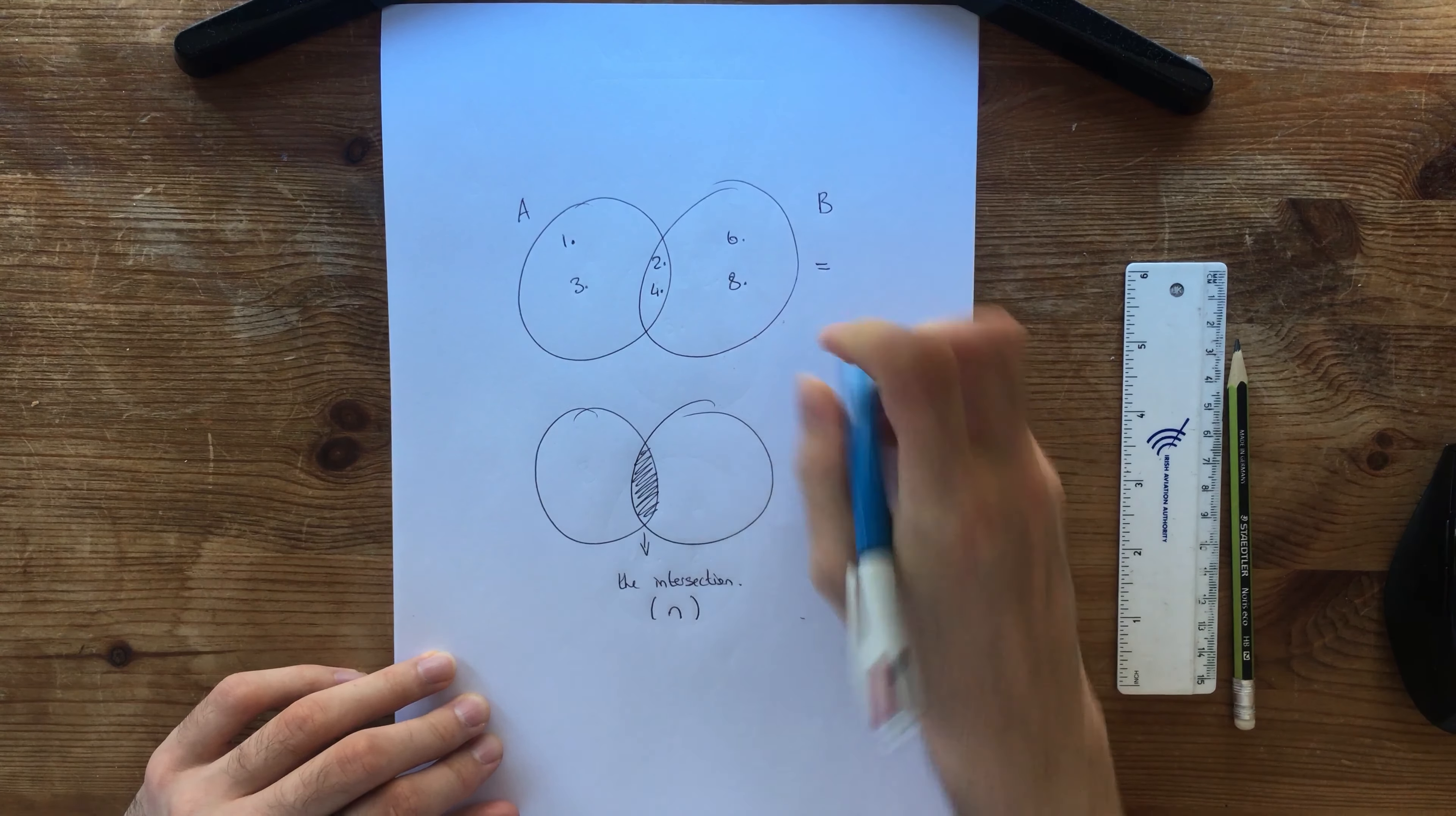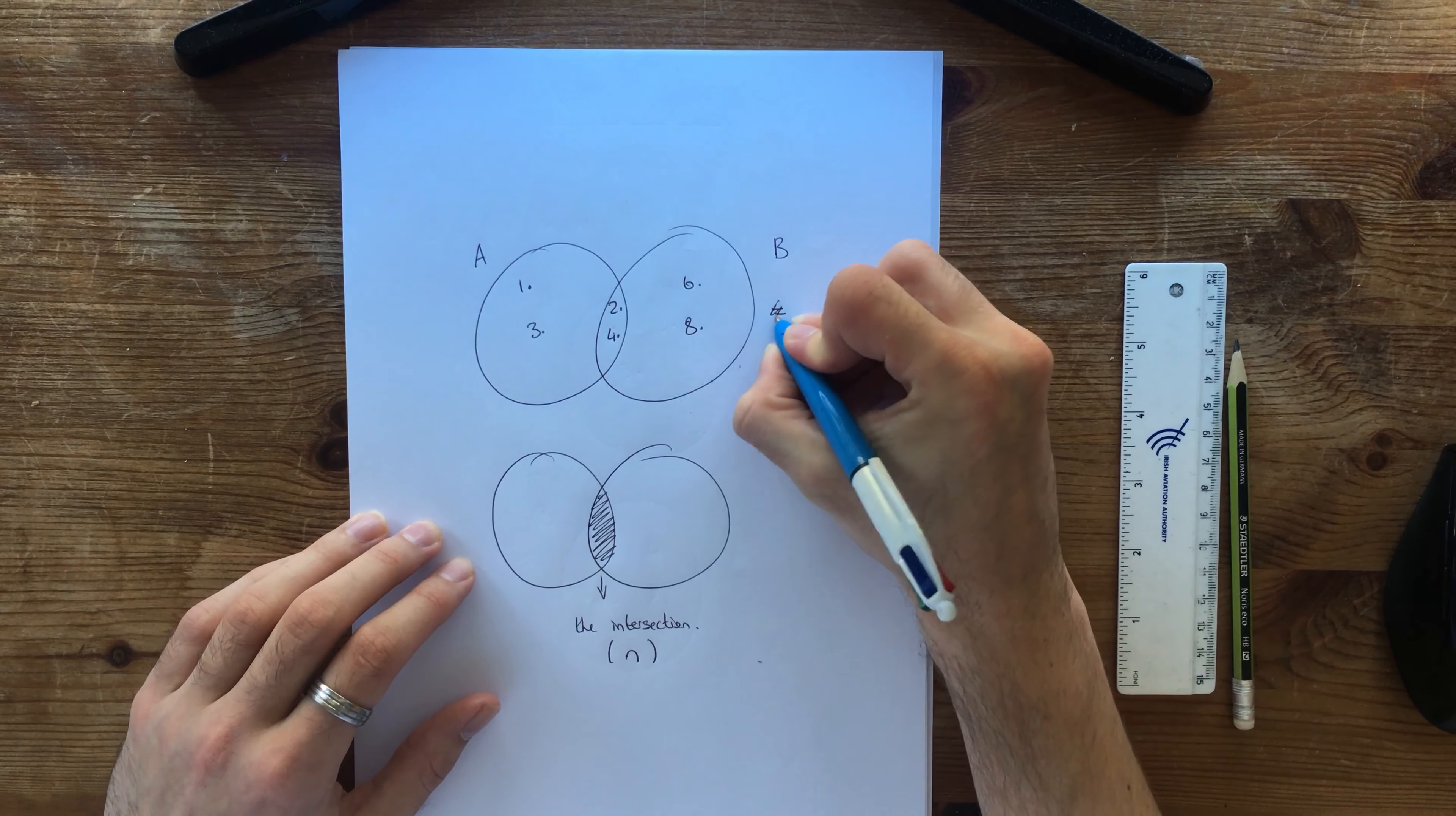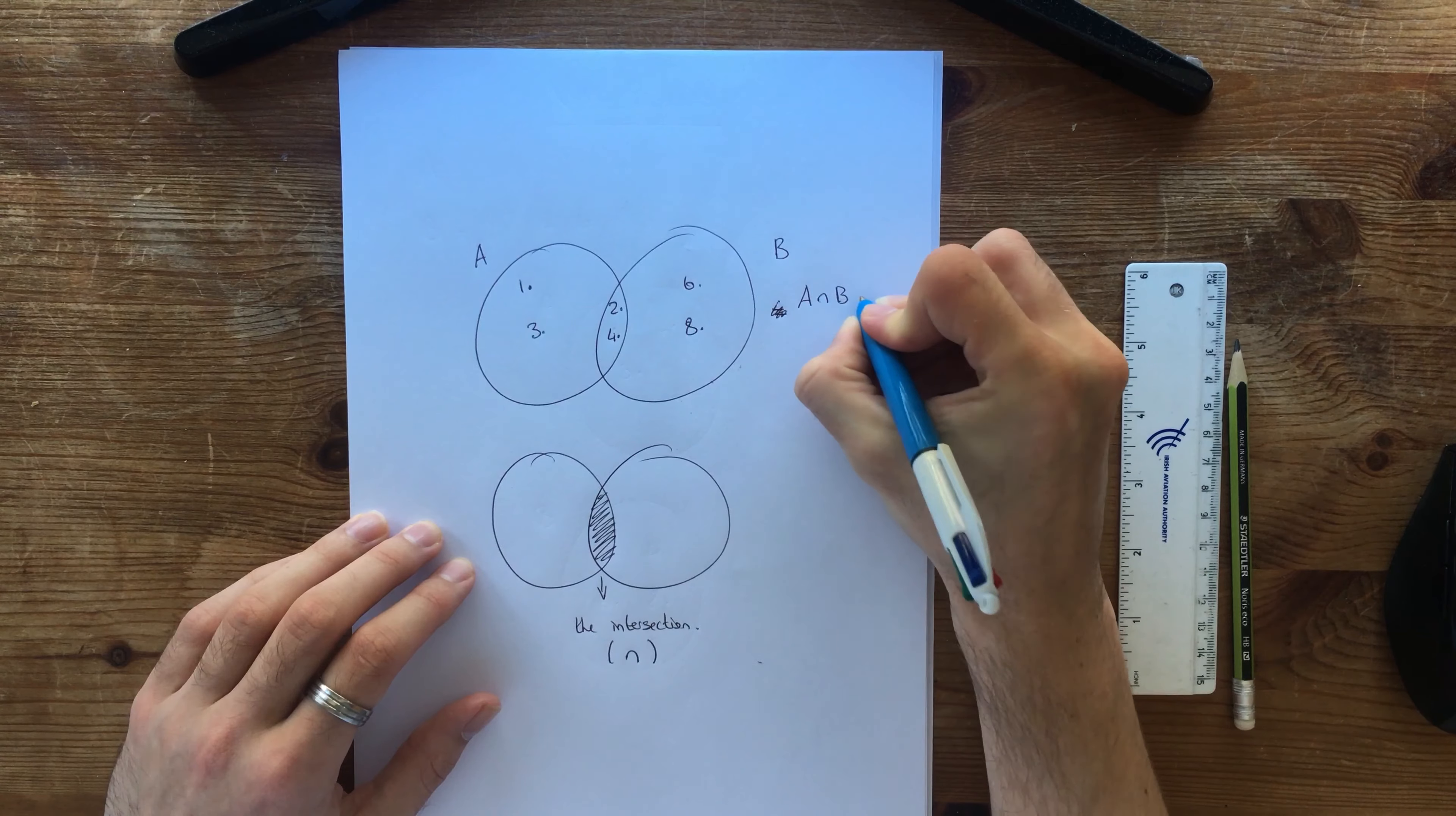And the intersection is shown by a little symbol. I'm going to put it in brackets here. It's like an N. Okay, so let's go back up here to this one. And if we just look at this and we say, sorry, not meant to be an equal sign there. A intersection B is equal to what?